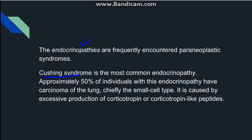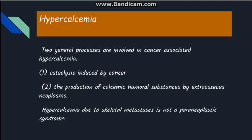The most common cancer associated with Cushing syndrome is carcinoma of the lung, specifically the small cell type of carcinoma of the lung — this is a very important MCQ question. The reason behind the Cushing syndrome here is the release of corticotropin or corticotropin-like peptides.